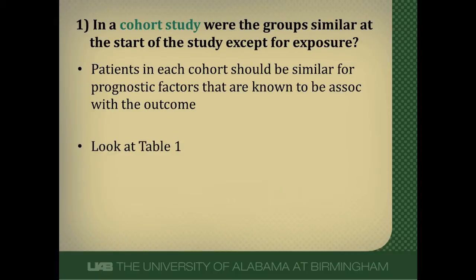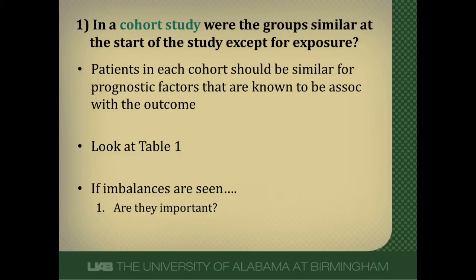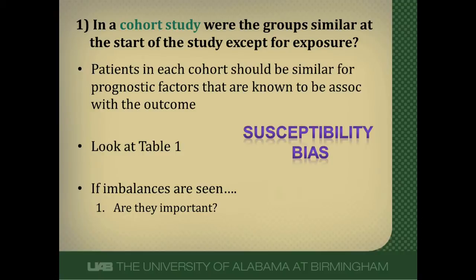The way you figure this out is to look at table one, the demographics table, and see if the two cohorts — the exposed and unexposed — have the same demographic factors. Commonly, you're going to see that they're not. Observational studies, unless special techniques are used, will most of the time have imbalances in demographic factors. So then you need to ask: are these differences important? Do these differences lead to different risks of developing the outcome? If they do, that's called susceptibility bias — one group is more susceptible to the outcome than the other. We need the two groups to have similar susceptibility to the outcome.